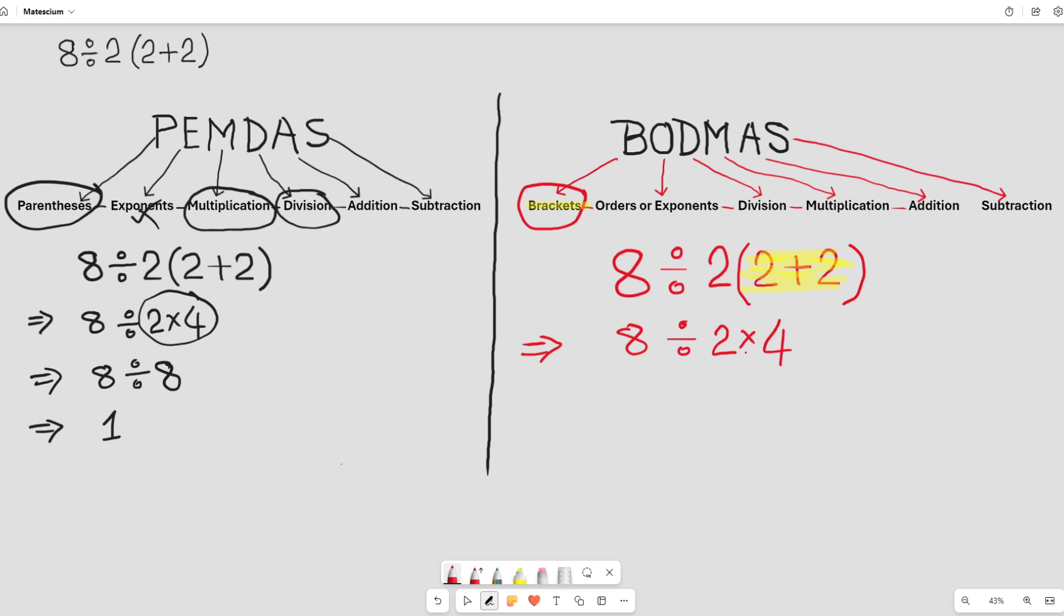There is no exponent or roots in this equation. That mean, next, we have to work on this division. 8 divided by 2 is 4 multiplied by 4.